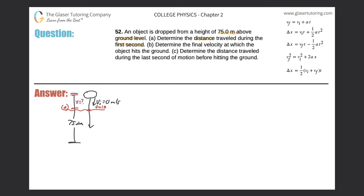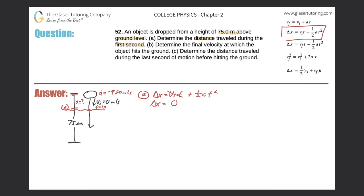What else do we know? We also know the acceleration — it's a free fall problem, so it's negative 9.80 meters per second squared. We have the acceleration, we have the initial velocity, we have time, and now we need to find x. Looking at the equations, we use equation number two: displacement equals initial velocity times time plus one-half of the acceleration times time squared.